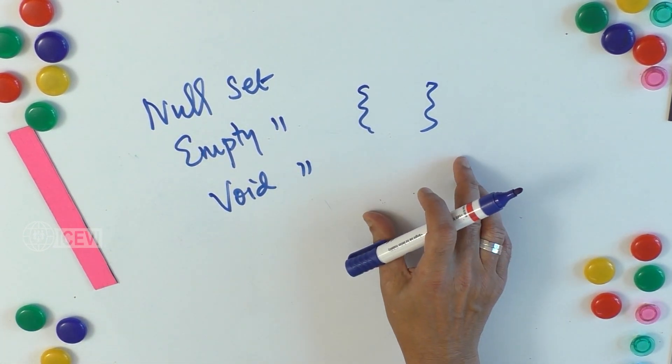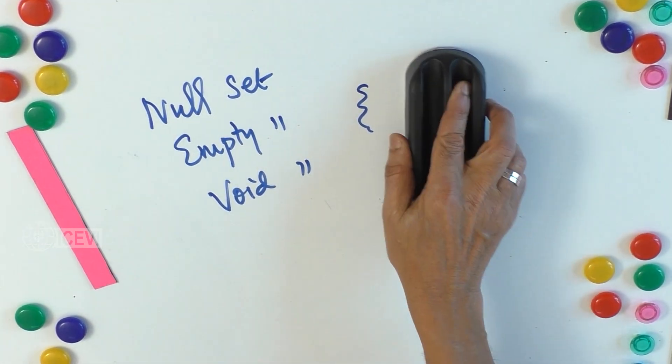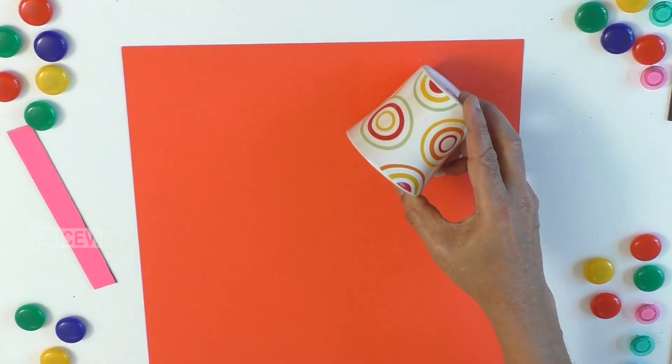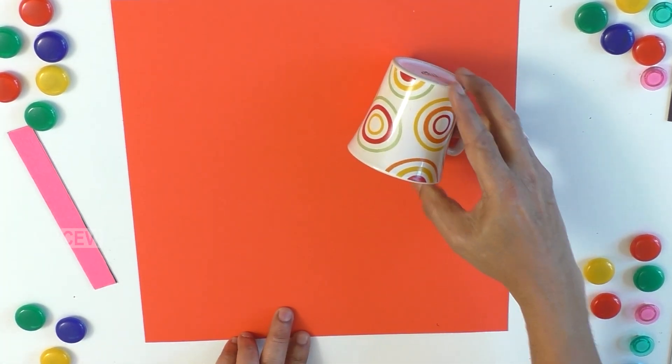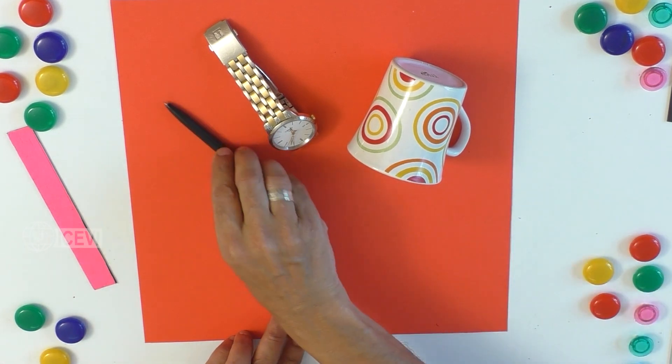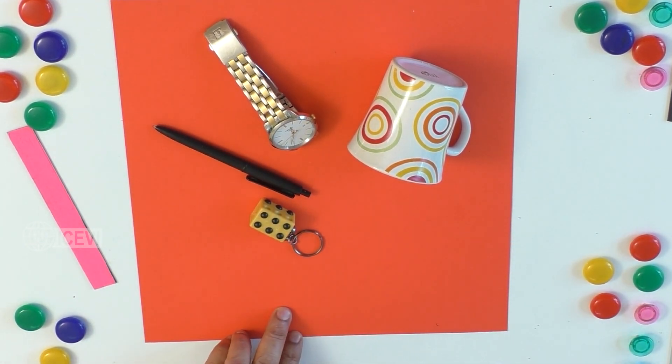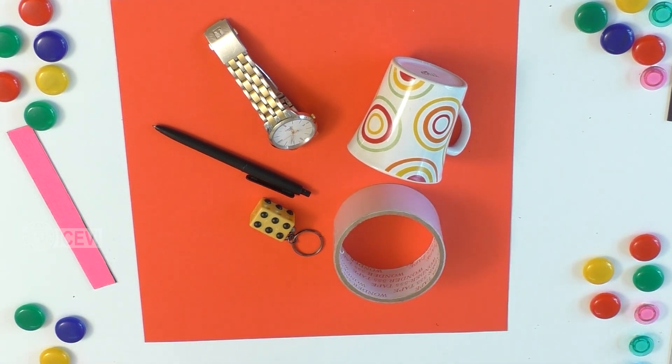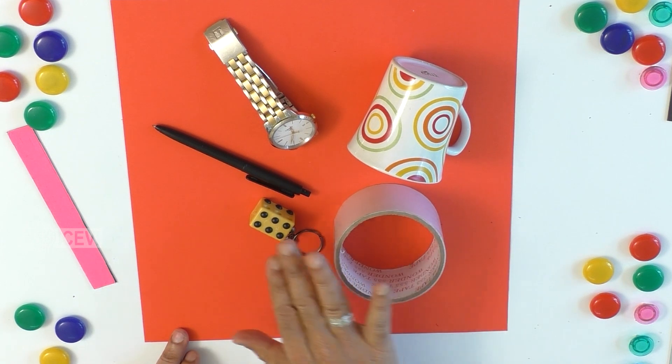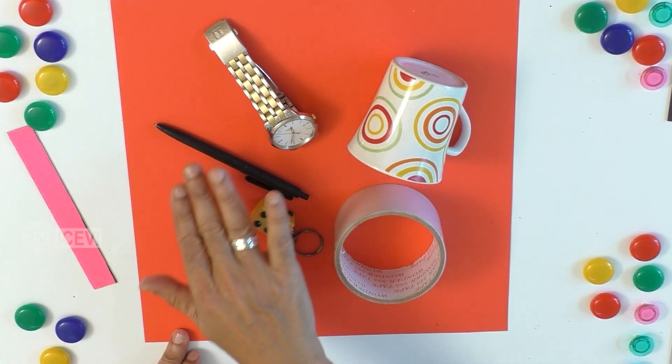Now the cardinal number of a set. Let us again take these objects: cup, watch, pen, keychain, and a cello tape. Now how many objects are here? One, two, three, four, five. The number of objects in the set is what you call a cardinal number.